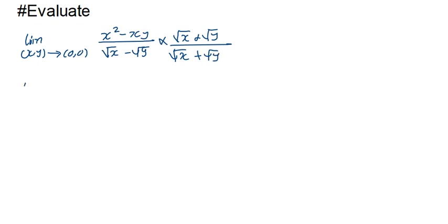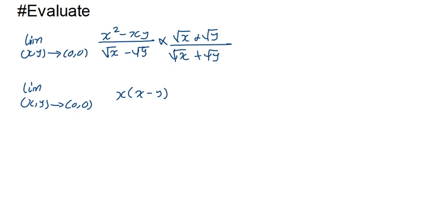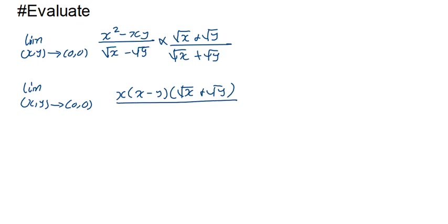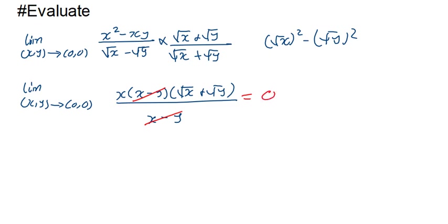After multiplying by the conjugate, I factor x from the numerator: x(x − y) · (√x + √y). The denominator becomes (√x)² − (√y)² = x − y, using the difference of squares. The (x − y) terms cancel, leaving x(√x + √y). Substituting (0, 0) gives zero.